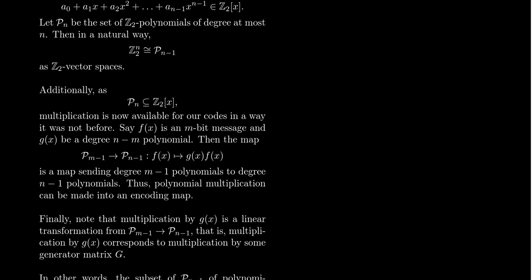And so multiplication by g gives us a map that sends an m-bit polynomial into an n-bit polynomial. Thus, multiplication by this polynomial g gives us an encoding map for these polynomials.